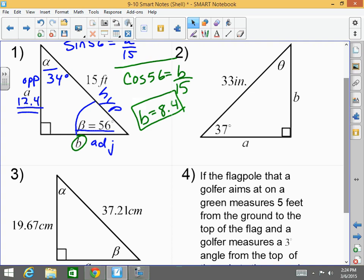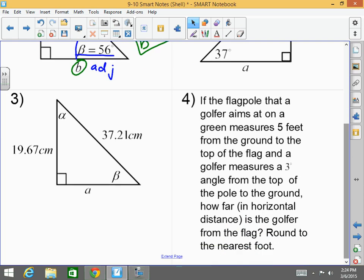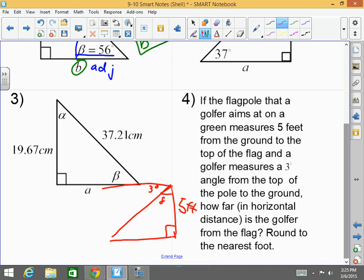The bell's about to ring. I know you're getting antsy. Practice this, please. And just real quick, before you leave, I won't do the math, but I will set this up for you. The flagpole that a golfer aims at on a green measures five feet from the ground. So you have this flag, and it's five feet tall, from the ground to the top of the flag. And a golfer measures a three degree angle from the top of the pole to the ground. So my baseline is here. This is a three degree angle of depression. So the real angle that we're working with, we're making this triangle here, is 87. Very good. And then they want to find, here's the golfer, he wants to find how far he is from there. So this would be the opposite over adjacent, it would be the tangent of 87 equals opposite over adjacent, and you can calculate from there.